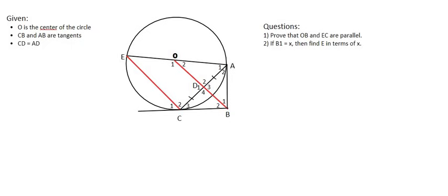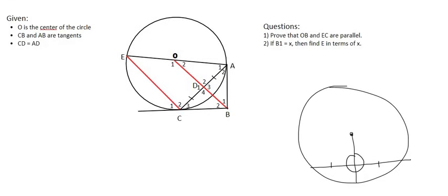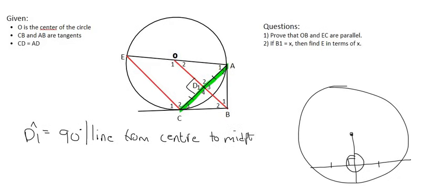Can you remember from one of the very first theorems we looked at, we said that if you have a circle where you have a line coming from the center and it hits a chord exactly in half, then what did it do to the angle formed over here? Well, well done if you remembered that it's 90 degrees. So for example, we could say here that angle D1 is 90 degrees because we have a line coming from the center and it's hitting that chord AC exactly in half. How do we know it's in half? Well, they've showed us that CD is equal to AD. And so the reason for that is the line from the center to the midpoint of the chord.